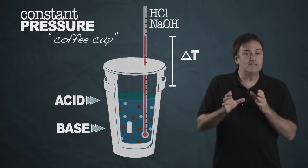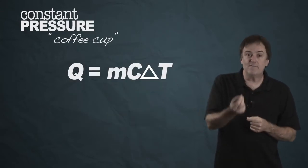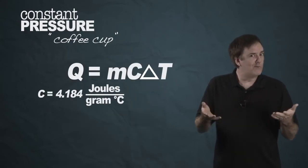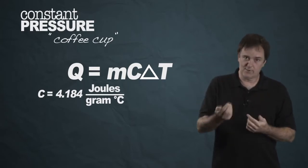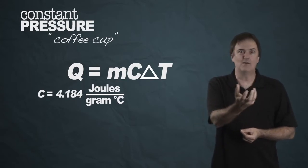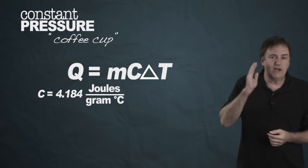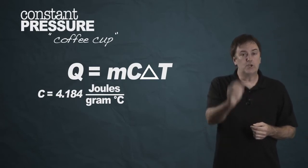From that delta T, you simply multiply that by the heat capacity of the water, which is 4.184 joules per gram per degree C, and you multiply it by the mass of the water, which you can easily weigh by sticking it onto a scale. Put all that together, and you've got your amount of heat, which we call Q.